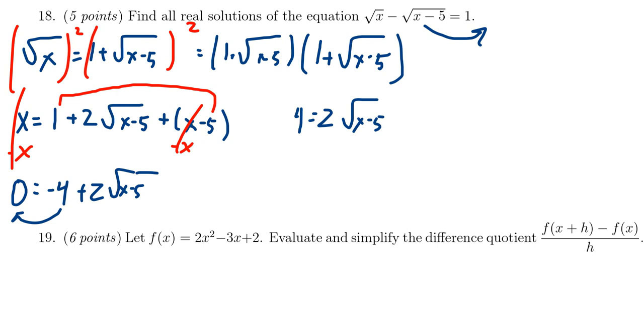Since both sides are divisible by 2, it would be nice to get rid of that coefficient. So divide both sides by 2. We then have the square root of x minus 5 is equal to 2.